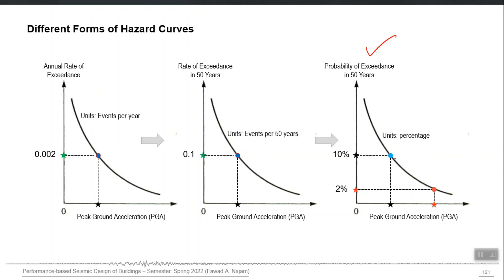We select 10 percent probability of exceedance and call it DBE, we select 2 percent and call it MCE, and we can select 50 percent or 30 percent in 50 years as SLE. In earthquake resistant design we can tolerate different probabilities of exceedance and design on different numbers, depending upon mutual consensus between all stakeholders — obviously the client will be the main stakeholder.